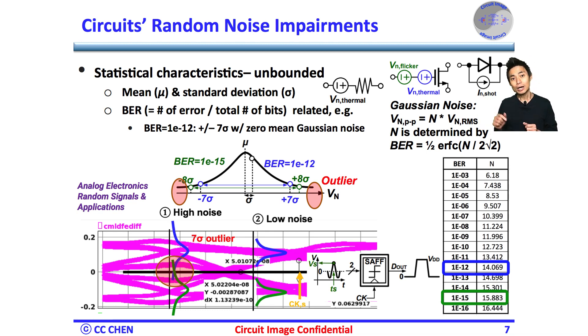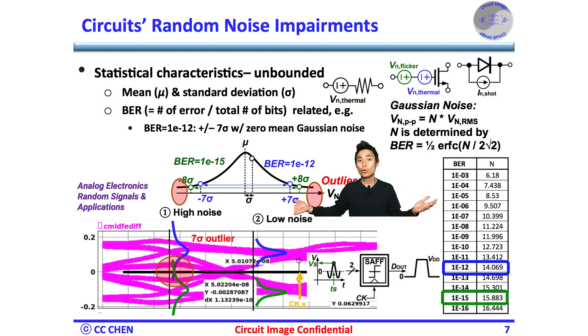Lastly, the shot noise occurs at any PN junction. Again, from the random signal class, you should also know that those noises are unbounded, which means we should evaluate the statistic characteristic to get the peak noise from the mean and standard deviation values.